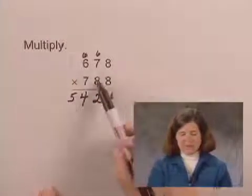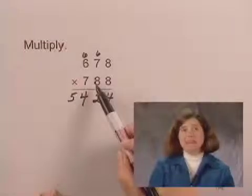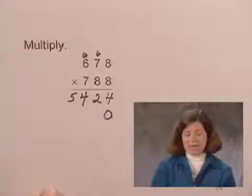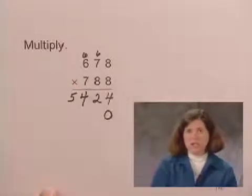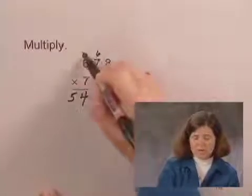Now we need to multiply 80 times 678. Since 80 is 8 tens, we'll write a 0, and then multiply 678 times 8. Now that will be the same multiplication I just did, but I'll do it again to make sure, just as a check, that I've done the first one correctly.